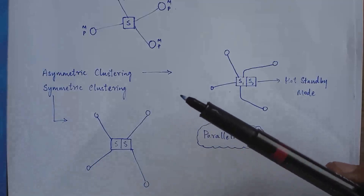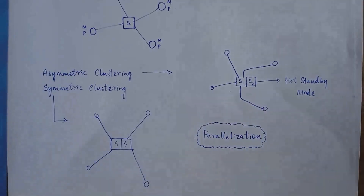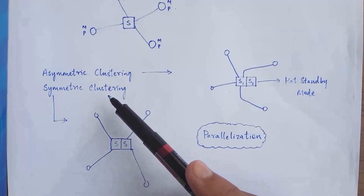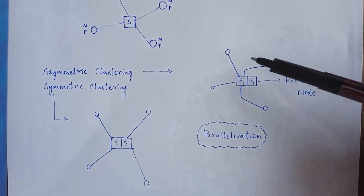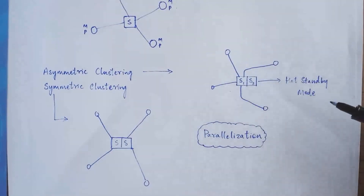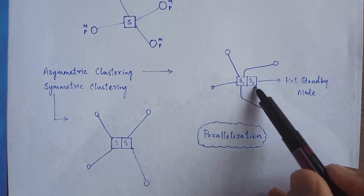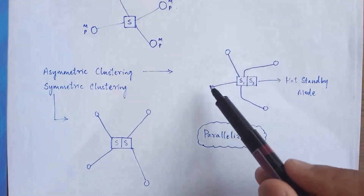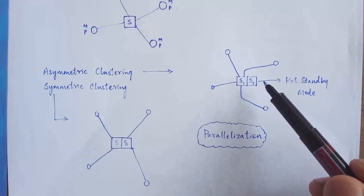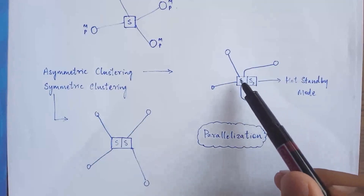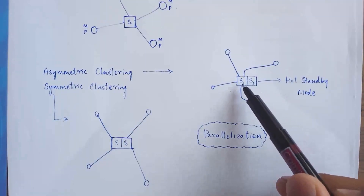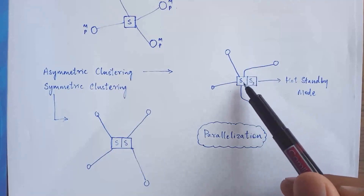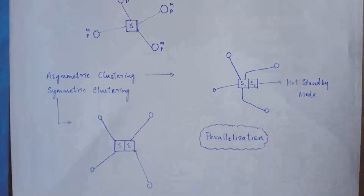Similar to multiprocessor systems, there are also two types of clustered systems: asymmetric clustering and symmetric clustering. In asymmetric clustering, all nodes are connected to the server and there are two servers, S1 and S2. Among these two servers, one server keeps providing services to the clients and the second server is in hot standby mode — it keeps watch on the first server. Whenever the first server fails, the standby server takes its place, becomes the active server, and carries on its activities.